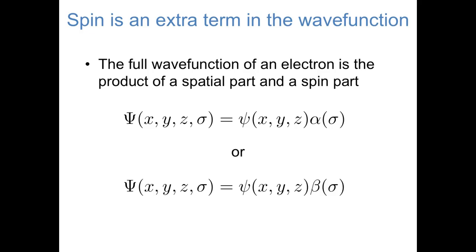Now that we've introduced spin, we can say that the full wave function of an electron is a function of three spatial coordinates and also a spin. The wave function is expressed as a product of a spatial part and a spin part — psi of either x, y, and z, or r, phi, and theta — times a spin that we call alpha or beta, spin up or spin down.